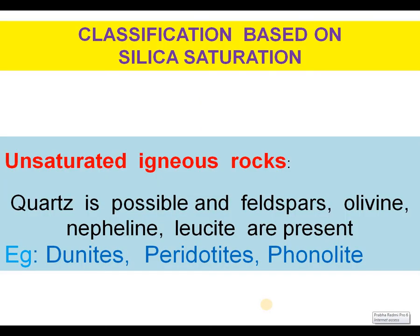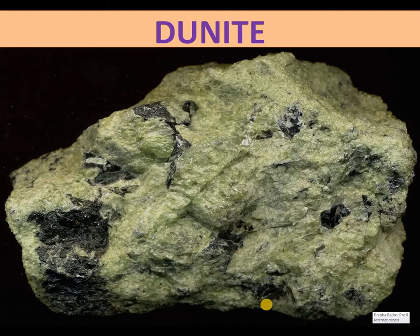Classification based on silica saturation: Unsaturated Igneous Rocks — quartz is absent, and feldspars, olivine, nepheline, and leucite are present. Dunite, peridotite, and phonolite are best examples for unsaturated igneous rocks. All these rocks are classified based on silica saturation.